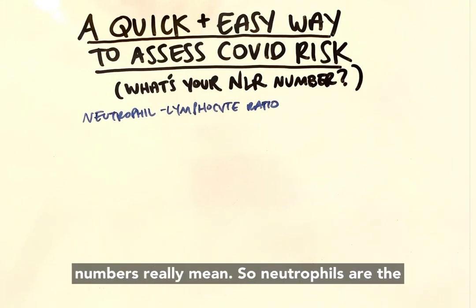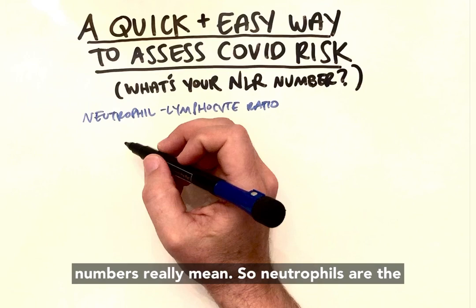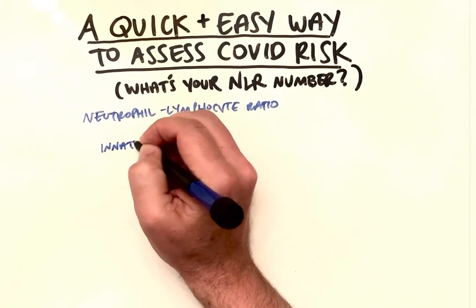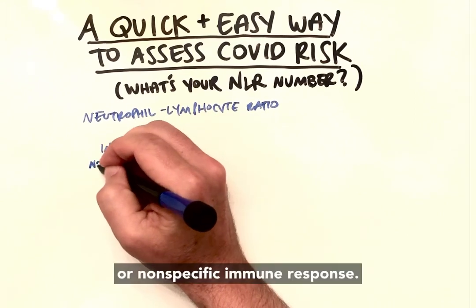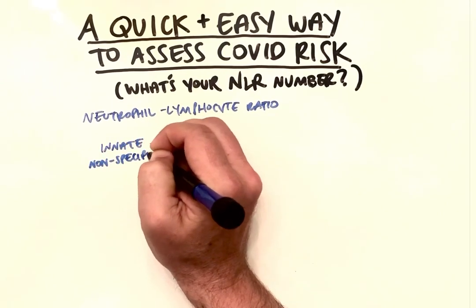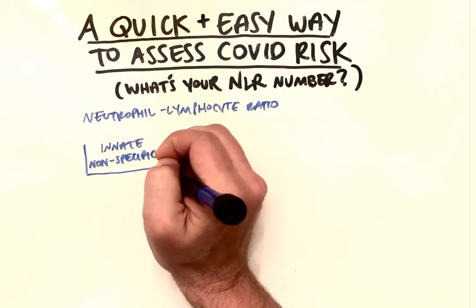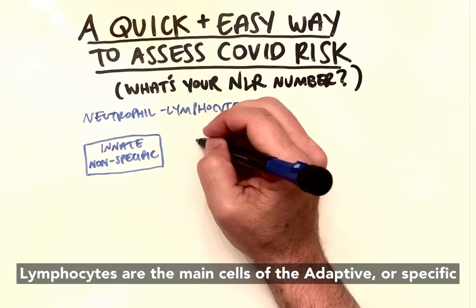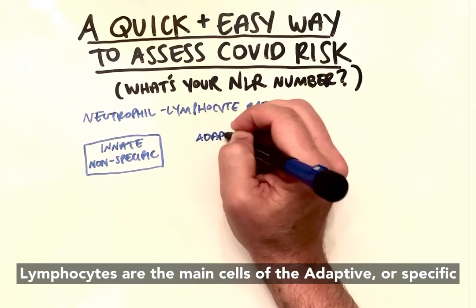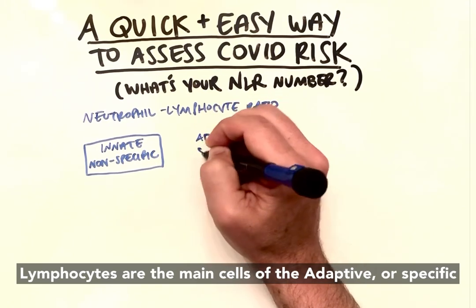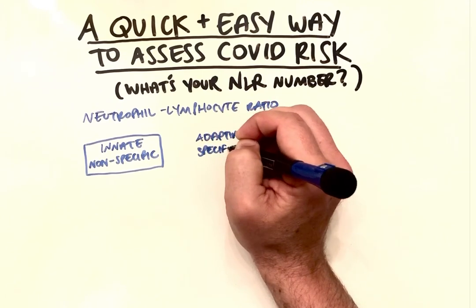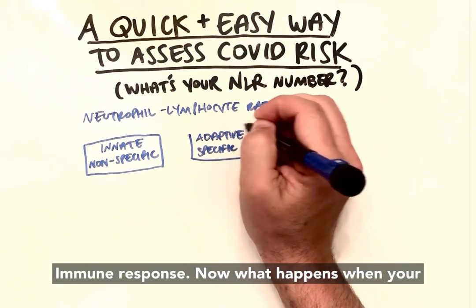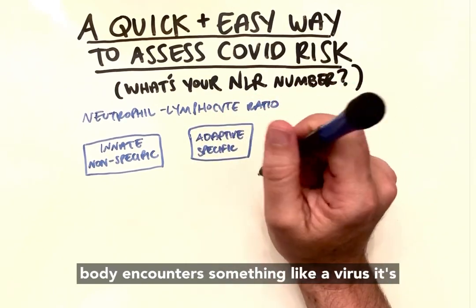Neutrophils are the main cells of the innate or non-specific immune response. Lymphocytes are the main cells of the adaptive or specific immune response.